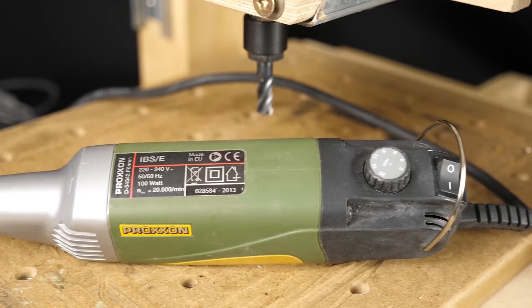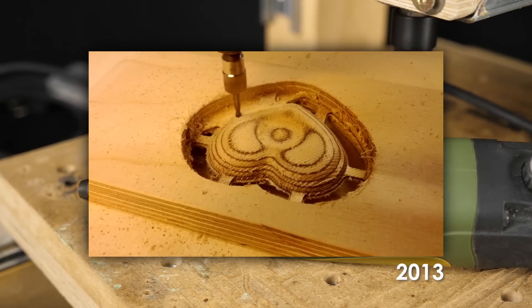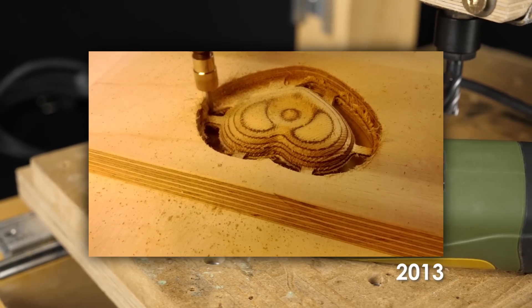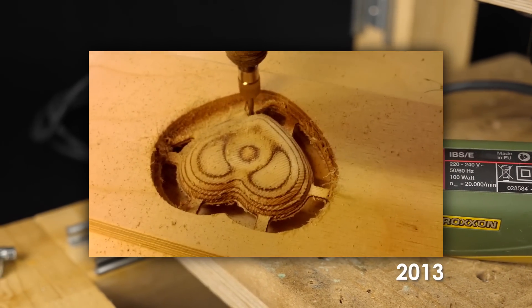When I first finished the CNC I mounted a Dremel to the machine which worked okay in softwood but wasn't ideal and metals were a no go. Also the 1/8 inch collet really limits the tools that you can purchase.